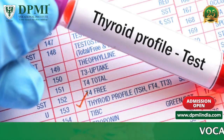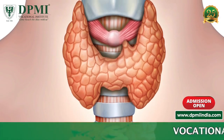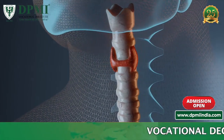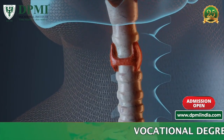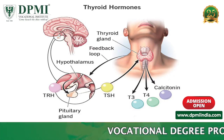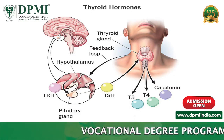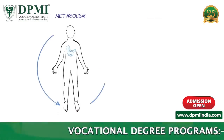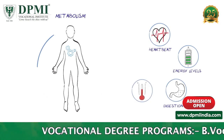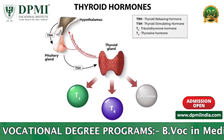Thyroid function test. The thyroid gland is a butterfly-shaped endocrine gland located in front of the neck. The thyroid gland secretes thyroid hormones, which help to maintain the metabolism of the body.